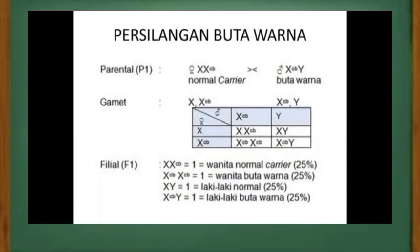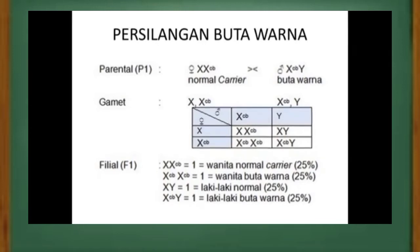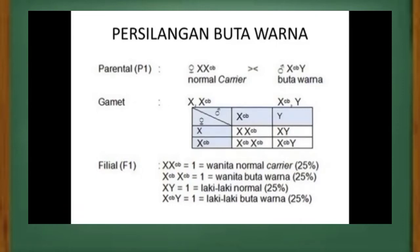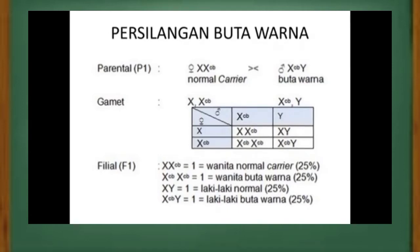Seorang perempuan akan menderita buta warna jika kedua kromosom X mengandung gen buta warna, yaitu X^CB-X^CB. Namun, jika hanya salah satu kromosom X yang mengandung gen buta warna, yaitu X^CB-X, maka perempuan tersebut akan menjadi pembawa atau carrier gen buta warna tanpa menjadi penderita. Pada laki-laki, jika kromosom X mengandung gen buta warna, maka akan langsung menderita buta warna, yaitu X^CB-Y.